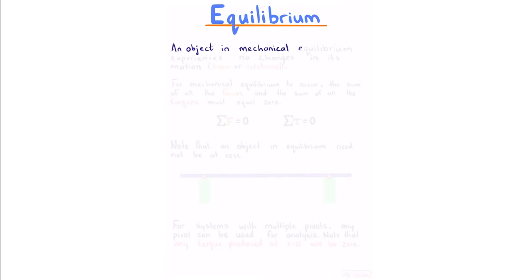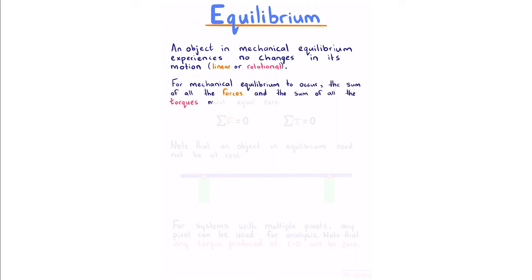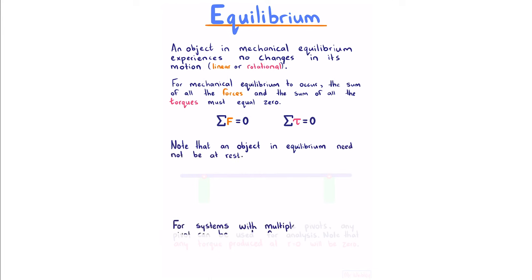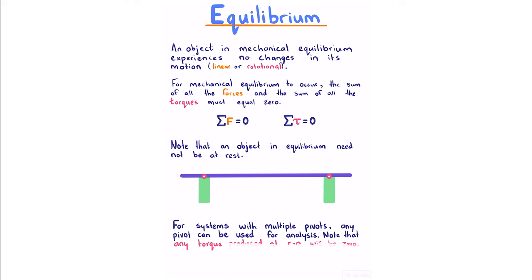Equilibrium. An object in mechanical equilibrium experiences no changes in its motion, linear or rotational. For mechanical equilibrium, the sum of all forces and the sum of all torques must equal zero. Note that an object in equilibrium need not be at rest. For systems with multiple pivots, any pivot can be used for analysis; any torque produced at r = 0 will be zero and drops out of the equation.